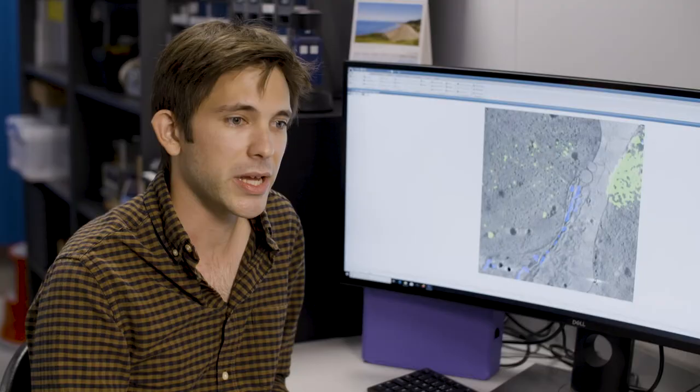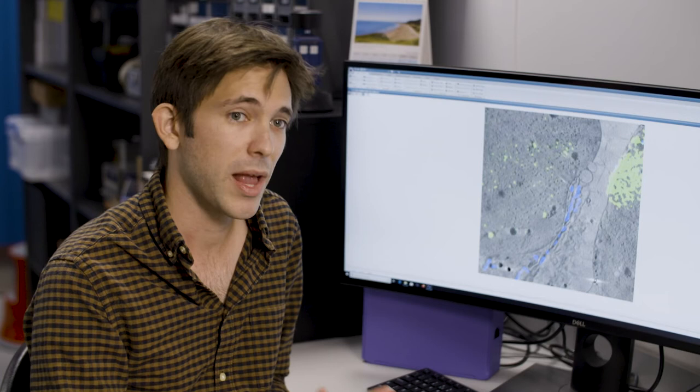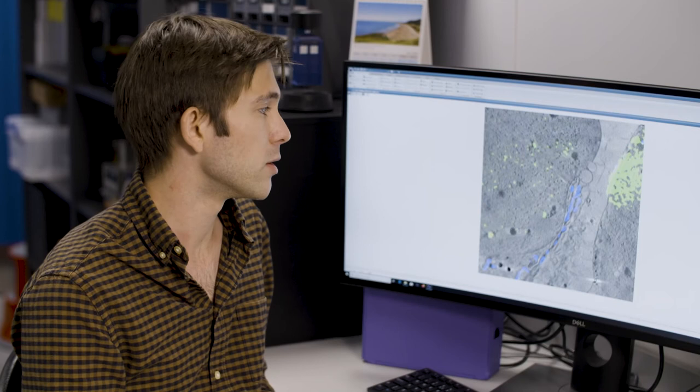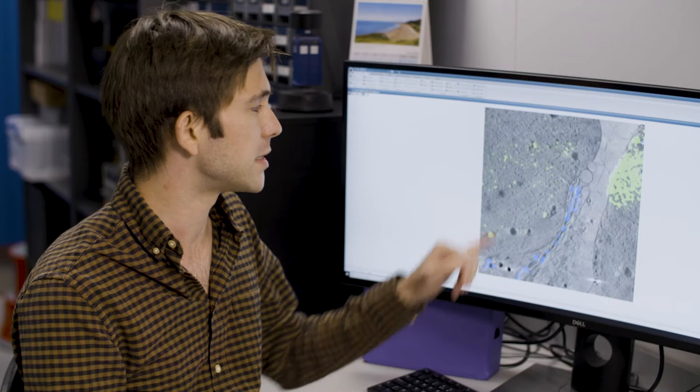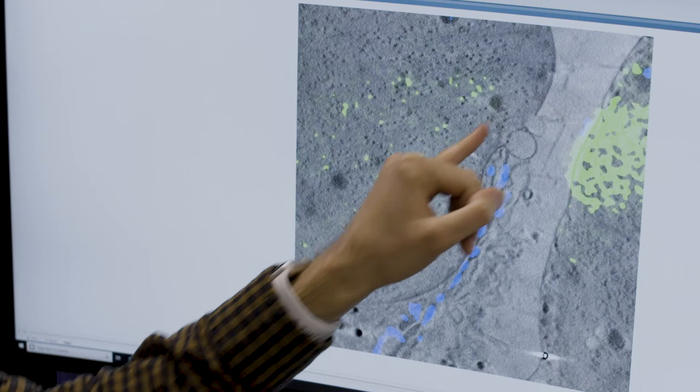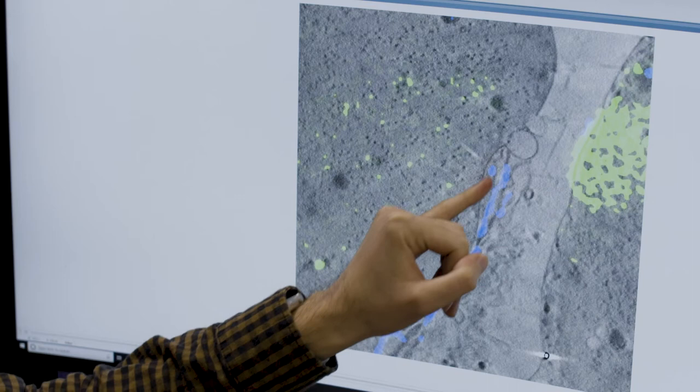So by merging the x-ray tomogram and the SIM of the same cell, we can study the distribution of specific viral components that we're interested in, in the wider context of the cellular environment. So for instance, here we can see viral components in the nucleus, appearing in green, associating with these black puncta. And in the cytoplasm, we can see mitochondria in blue, associating with the dark structures we see in the tomogram.